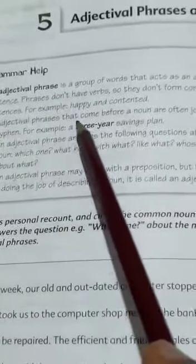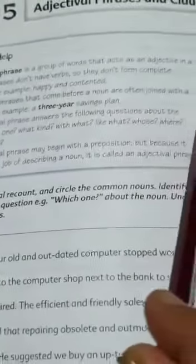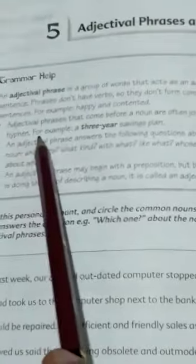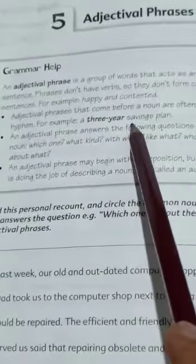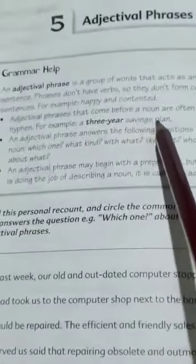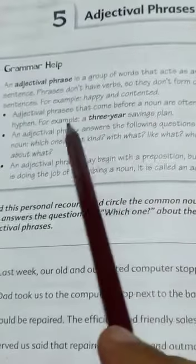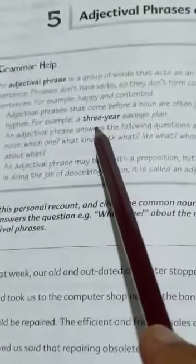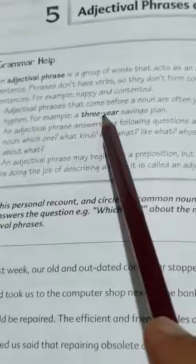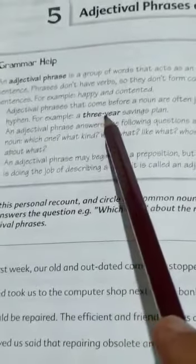An adjective phrase that comes before a noun are often joined with a hyphen. So, is mein kya hai ke agar ek noun hai, jaise yahan pe saving plans jo hai woh ek noun hai. Lekin adjectival phrase jo hai woh us se pehle aa raha hai to is mein kya hoga? Ke is ko join karenge aap hyphen ke saath. Theek hai? Yeh punctuation hai.